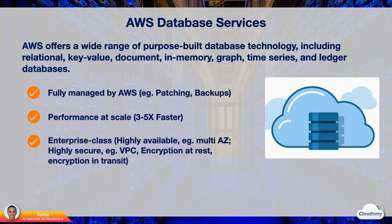AWS databases are built for business-critical enterprise workloads, offering high availability, reliability, and security. These databases support multi-region, multi-master replication. They provide full oversight of your data with multiple levels of security, including network isolation using Amazon VPC, encryption at rest, and encryption in transit.